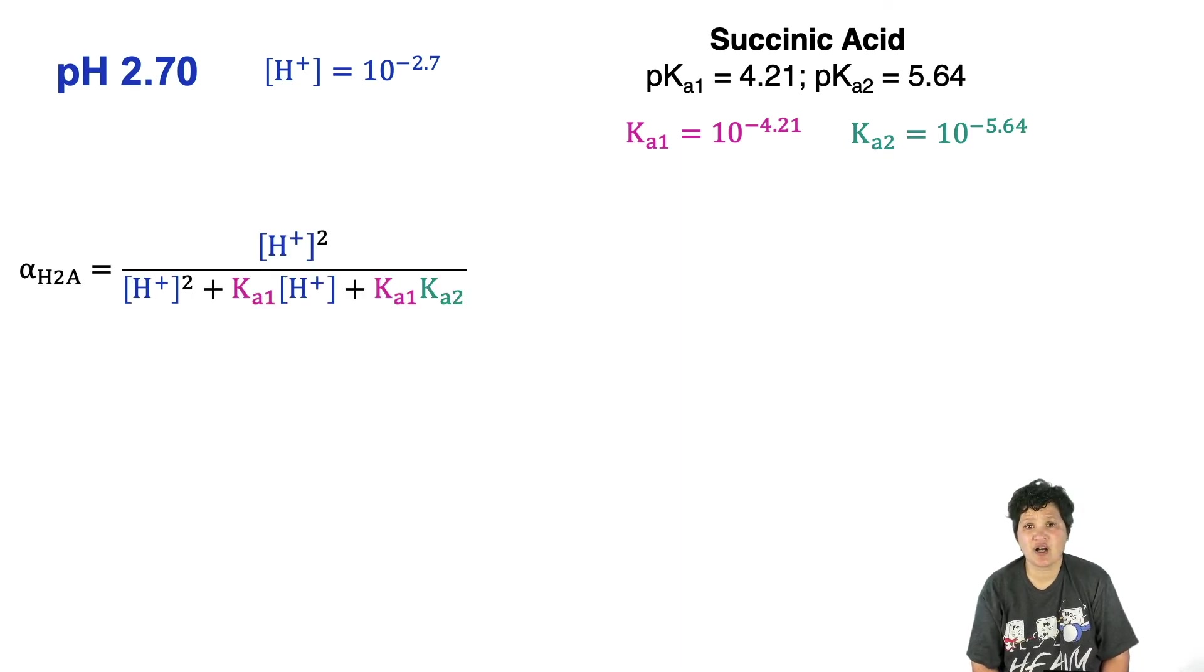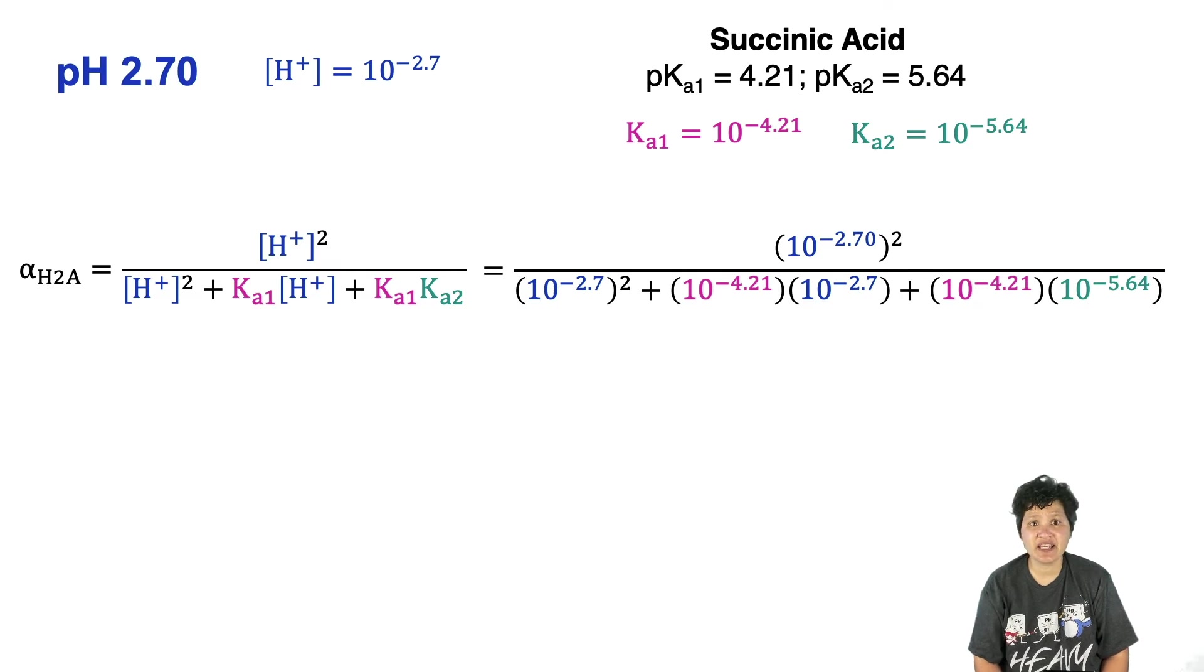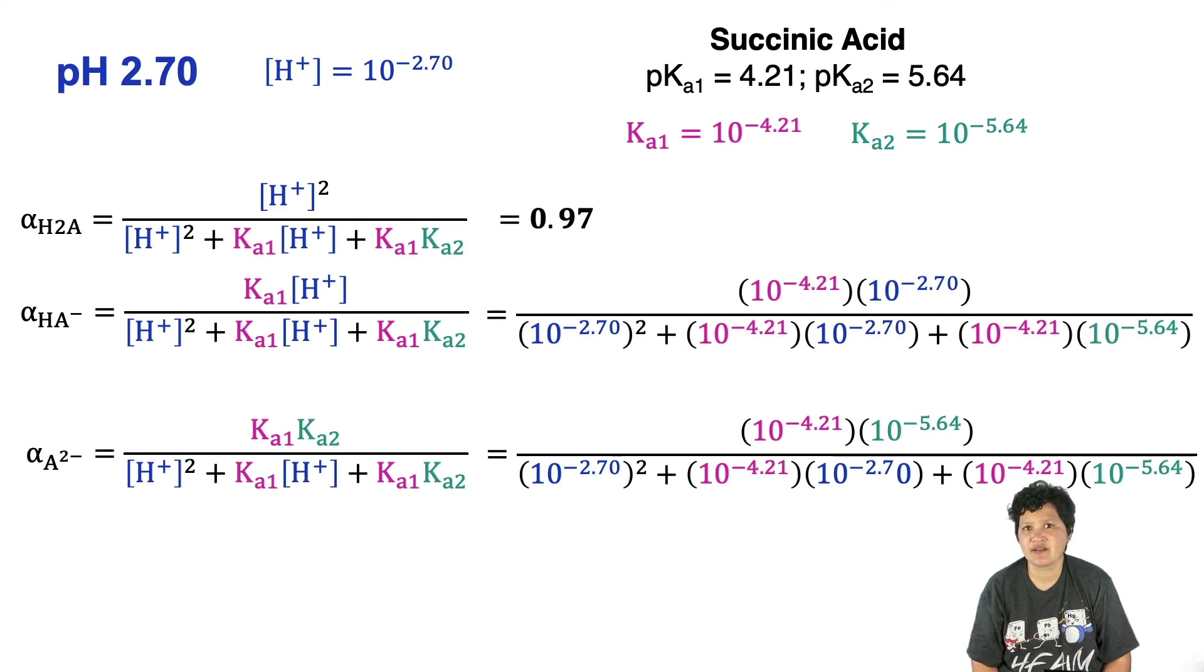Now let's plug those into our fractional composition expressions. You can see how I've done that here for the fractional composition of H2A. Note that I could have put 6.17 times 10 to the minus 5th instead of 10 to the minus 4.21 for Ka1, but I find it a lot easier to do this way. If you plug this into your calculator, you get 0.97. We can do similar calculations for HA-minus and A2-minus. These tell us that the fractional composition for HA-minus is 0.03, and A2-minus is 3.4 times 10 to the minus 5th. In other words, at pH 2.7, you have mostly undissociated succinic acid, a small amount of singly deprotonated succinic acid, and very little of the doubly deprotonated anion.